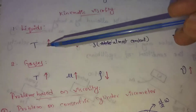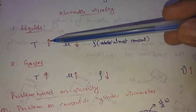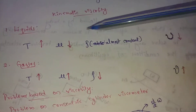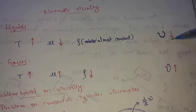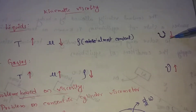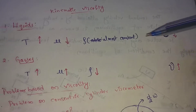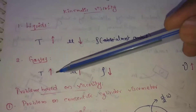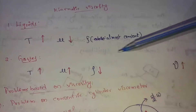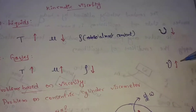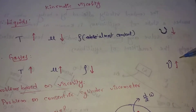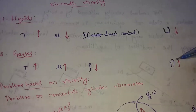Summary: For liquids, temperature increases — kinematic viscosity decreases. For gases, temperature increases — kinematic viscosity increases.